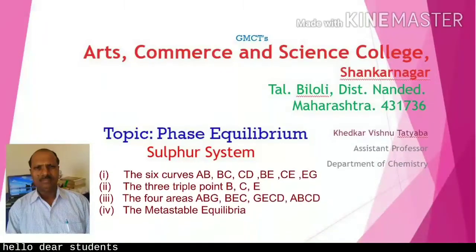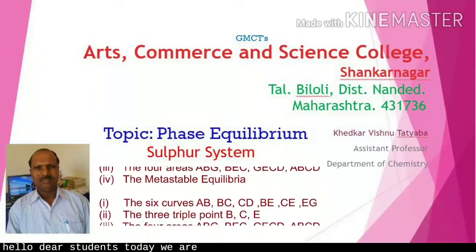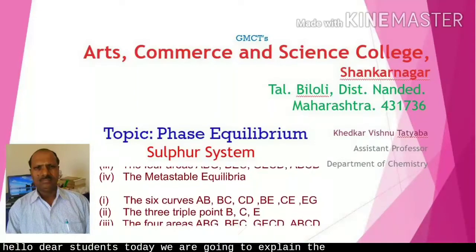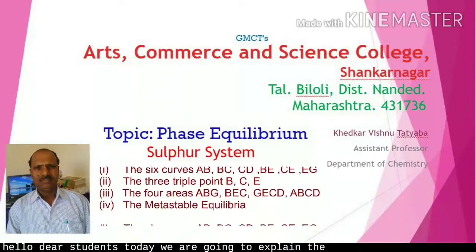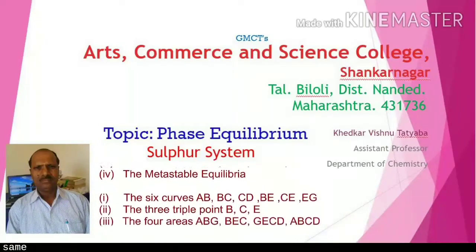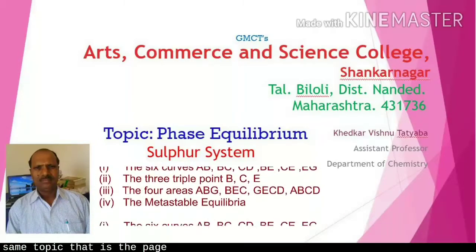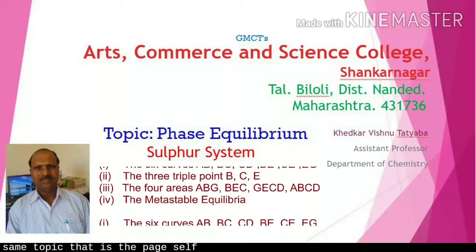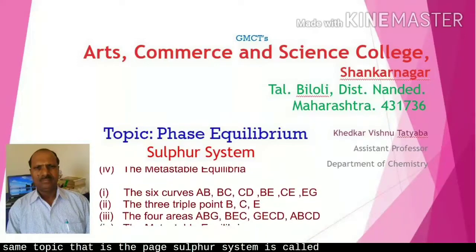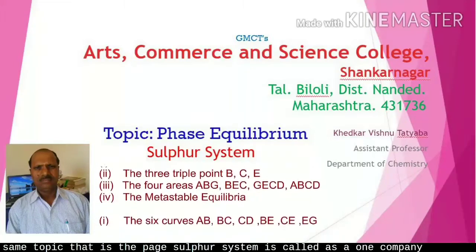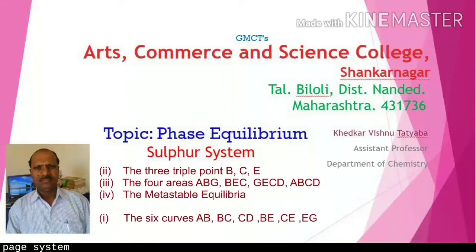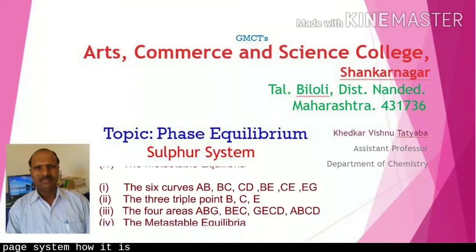Today we are going to explain the next system from the same topic of phase equilibrium. The sulfur system is called a one-component, four-phase system.